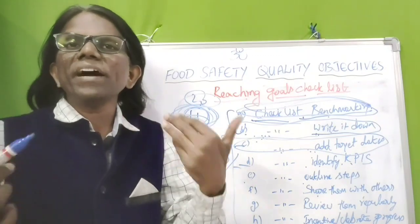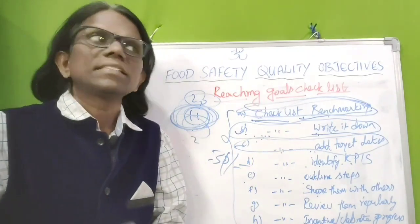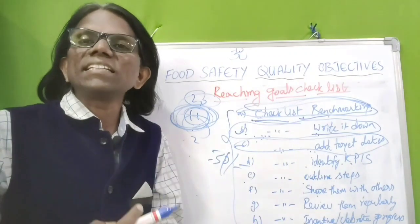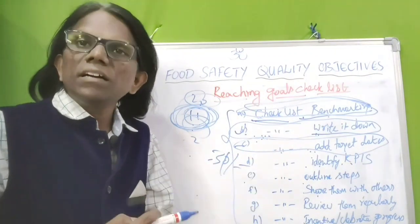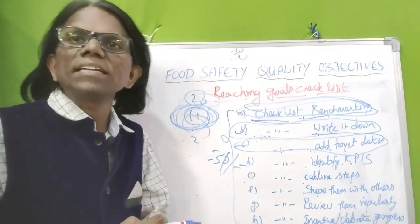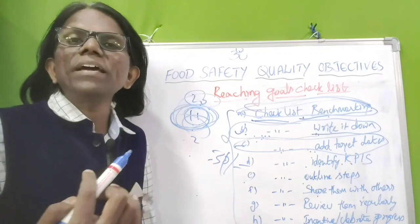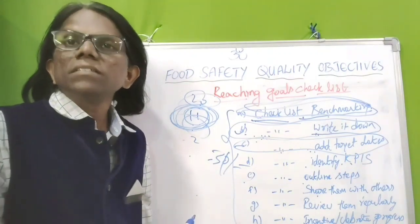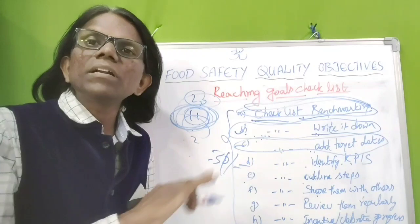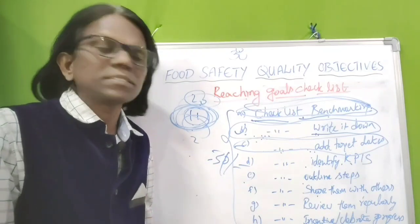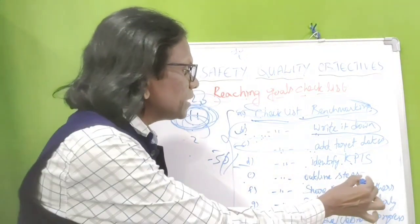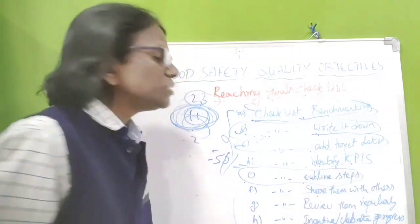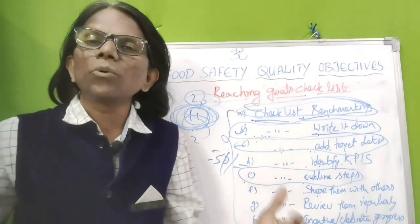The next checklist item is to identify key process indicators. In the process line, to measure the goals we have to identify key process indicators such as internal audit results, third-party audit results, or external monitoring results. We identify and measure these KPIs to compare and track goal progress.